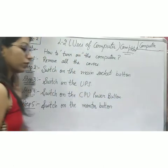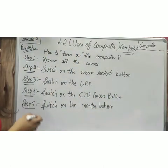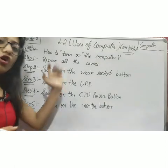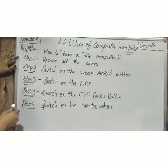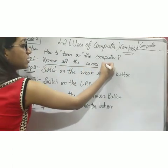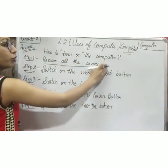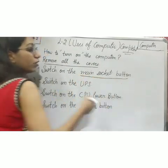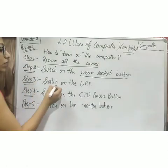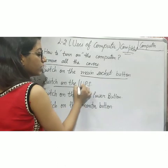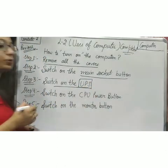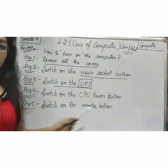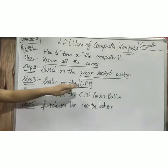Now we are starting with the recap of the previous session: how to turn on the computer. I told you 5 steps. Step 1 was remove all the covers. Step 2 was switch on the main socket button. Step 3 was switch on the UPS. UPS is the uninterruptible power supply — if the power goes, your computer will still work for some time if you have a UPS connection.